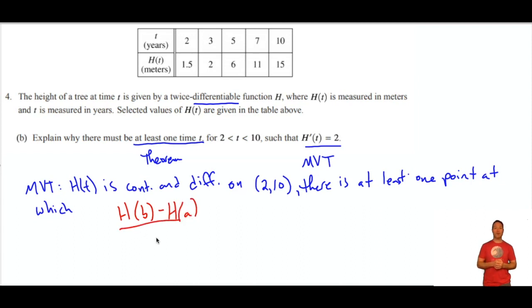So the conclusion of the theorem is that there must be at least one point on that interval at which the average rate of change is equal to the instantaneous rate of change. So the regular slope between two points, change in function over change in x, is equal to the derivative, which is instantaneous.